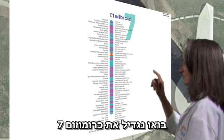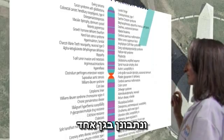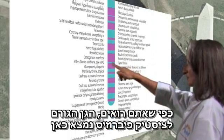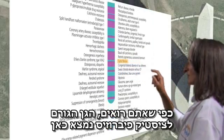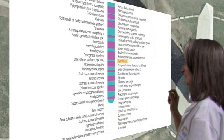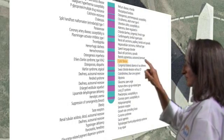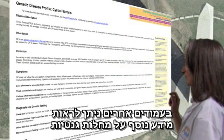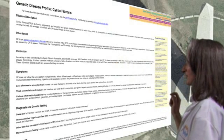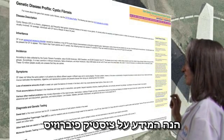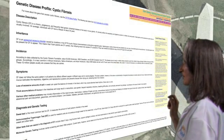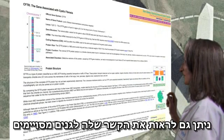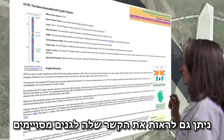Let's enlarge Chromosome 7 and look at one gene thereon. As you can see, the gene that causes cystic fibrosis is here. On other pages, you can see genetic disease profiles. Here is the cystic fibrosis profile.